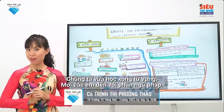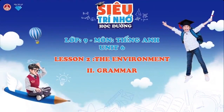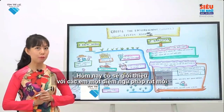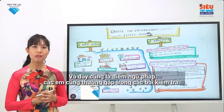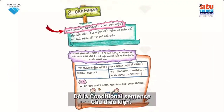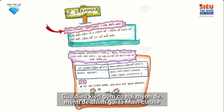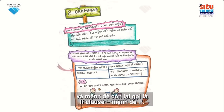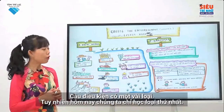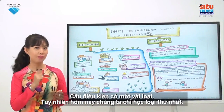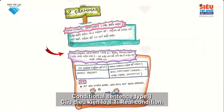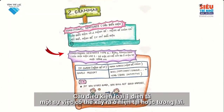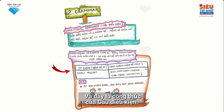Let's go to the grammar part. Today I will present a new and very important grammar issue in the 9th grade English program. It is also a special grammar issue that you will often see in examinations. That is a conditional sentence. Conditional sentences include two clauses: the main clause and the if clause.